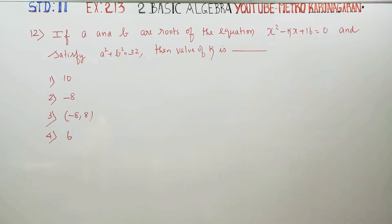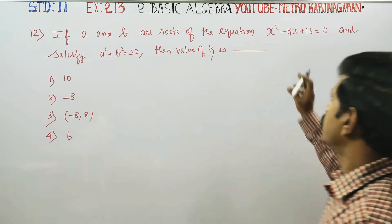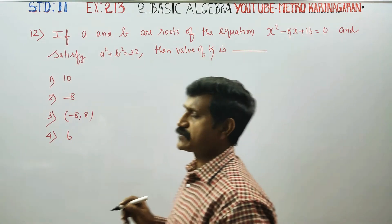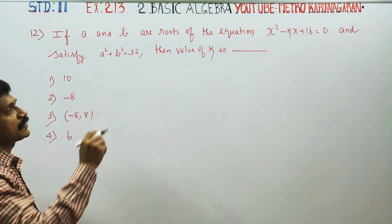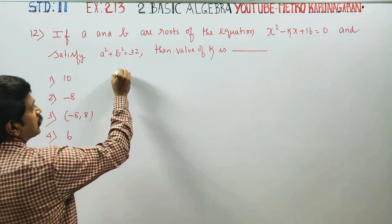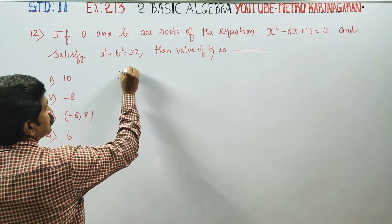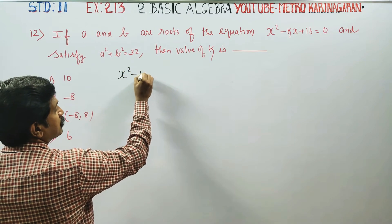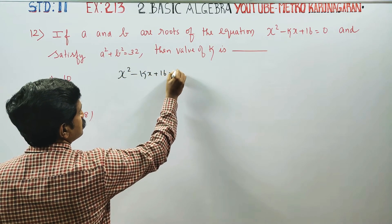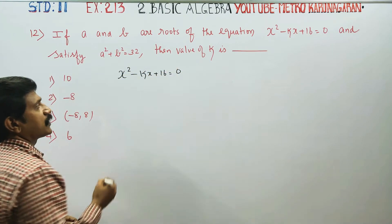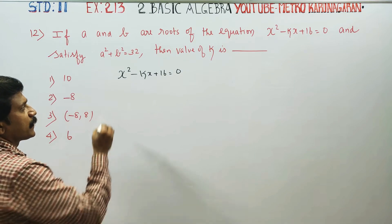Dear 11th standard students, this is exercise number 2.13, sum number 12. A and B are the roots of the quadratic equation x² - kx + 16 = 0.